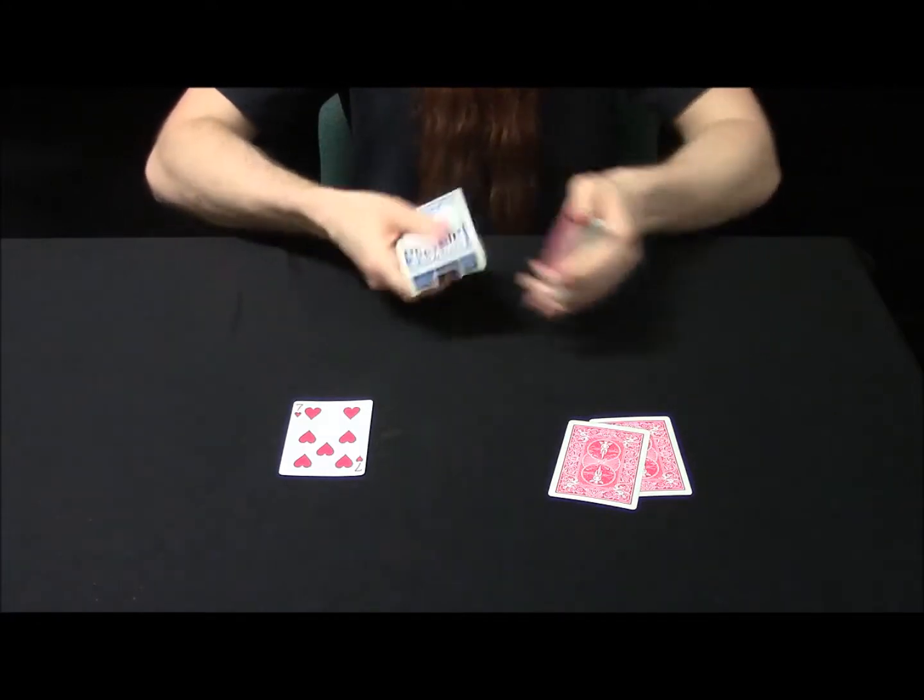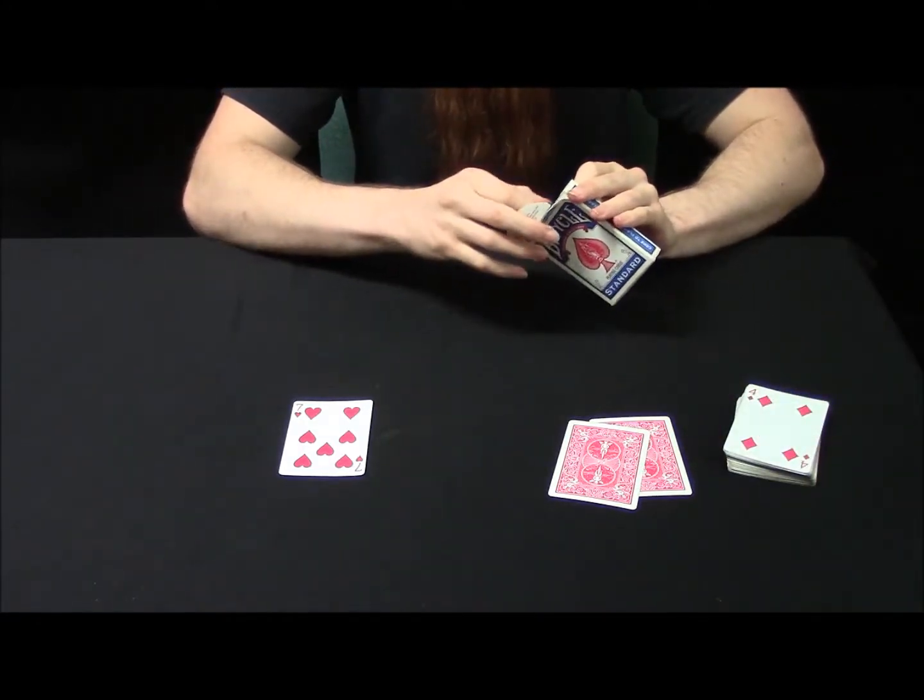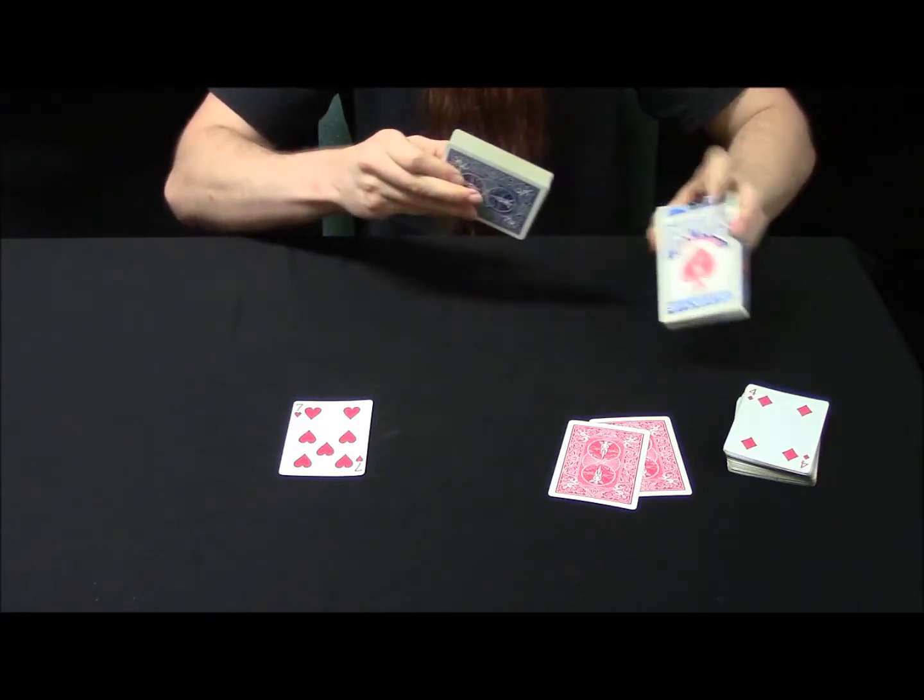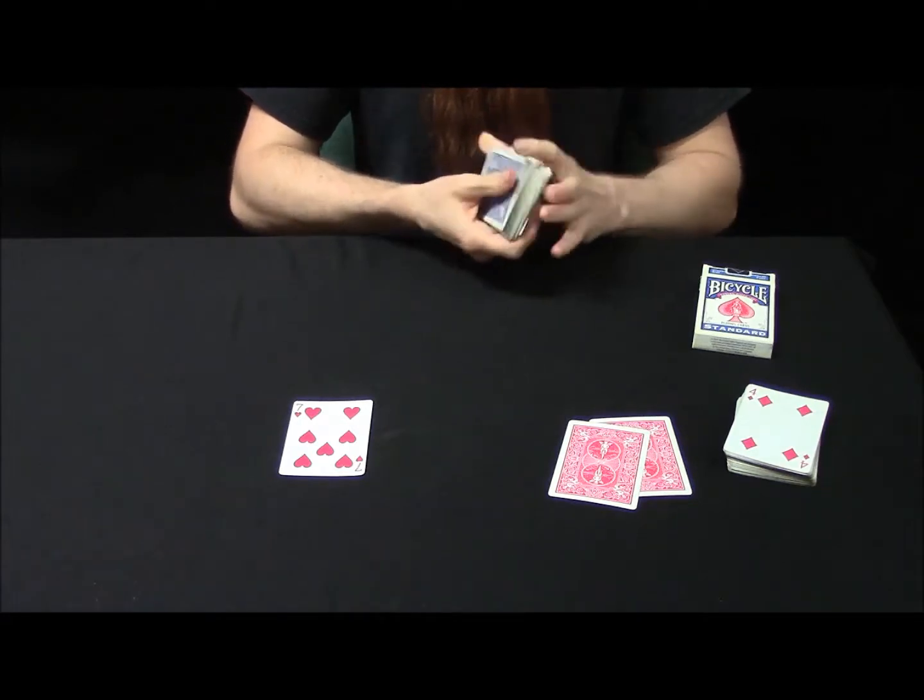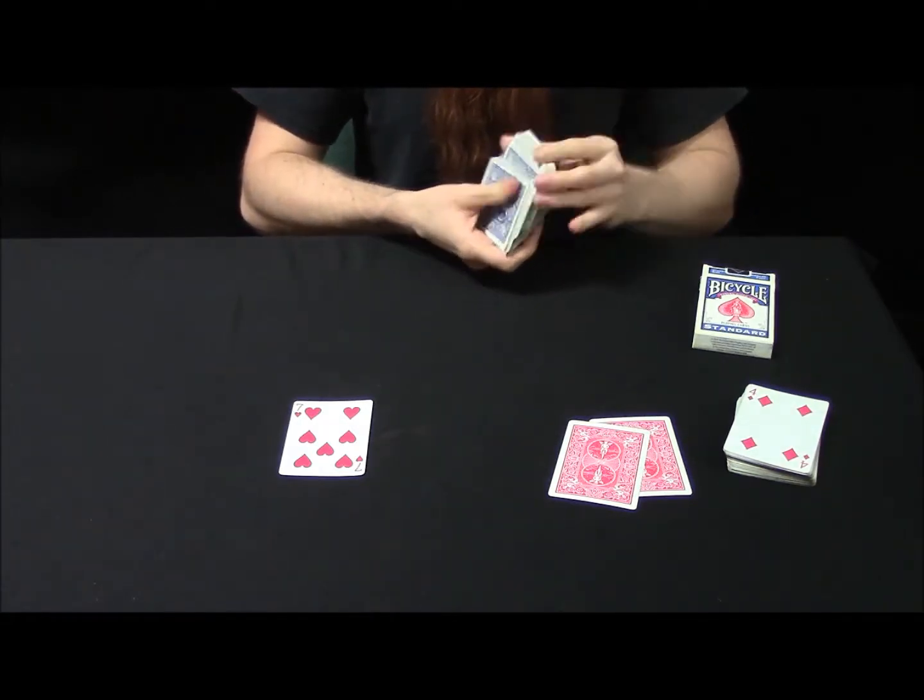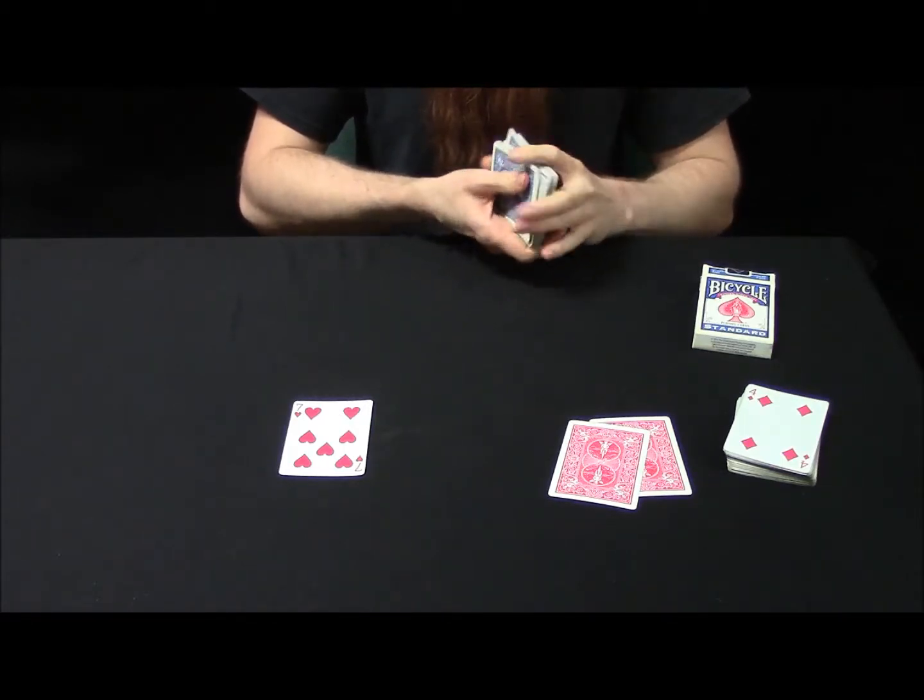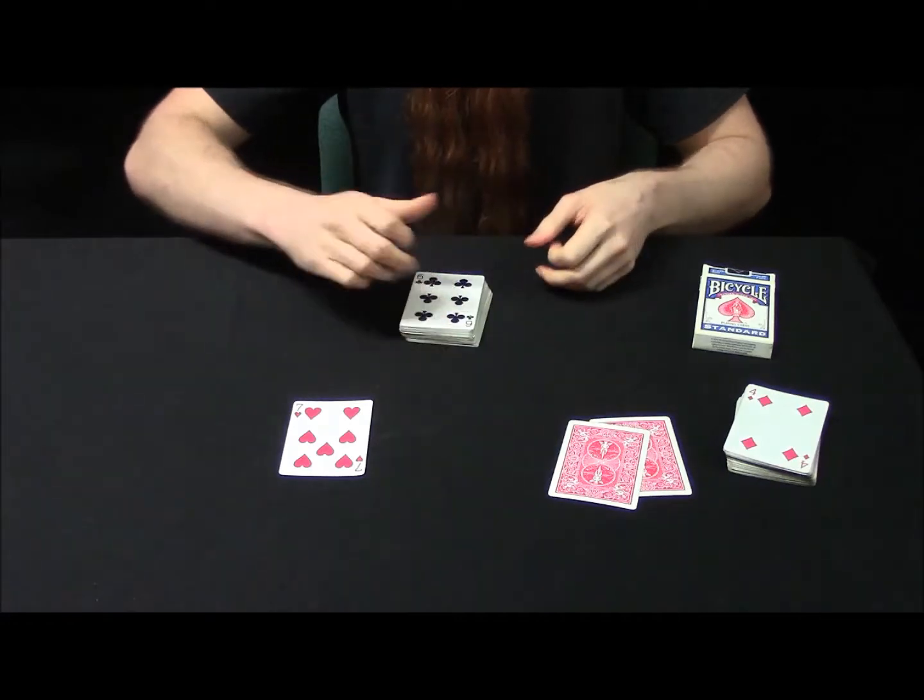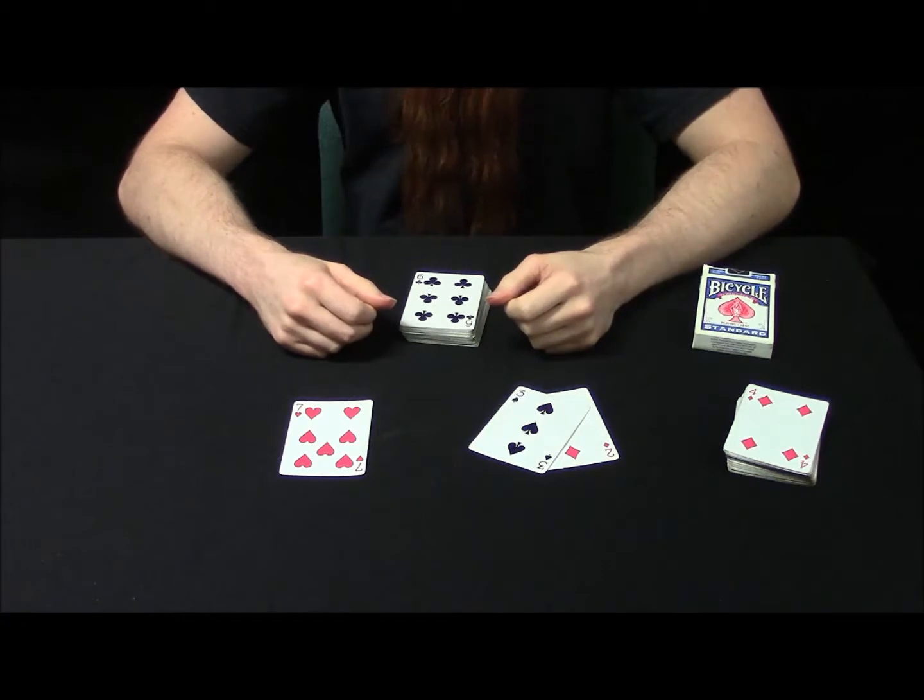I'm going to go ahead and give this deck a quick shuffle. And we're going to use those two cards as our location cards. These two are a two and a three. They total five.